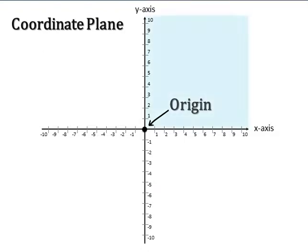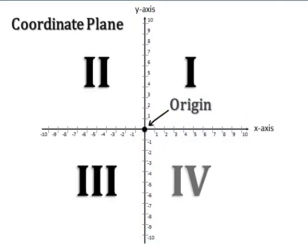This setup divides our space into four sections. We call these sections quadrants and number them 1, 2, 3, and 4.